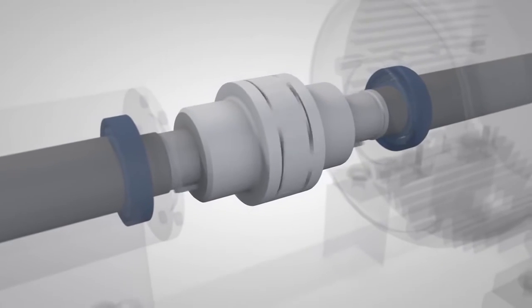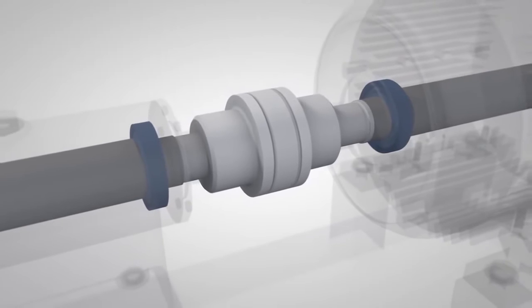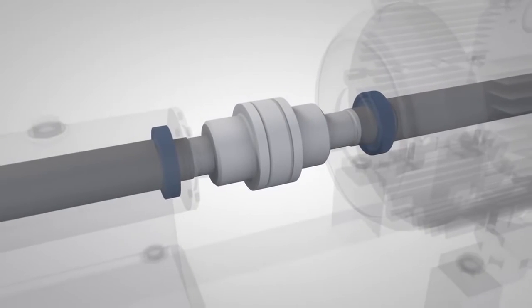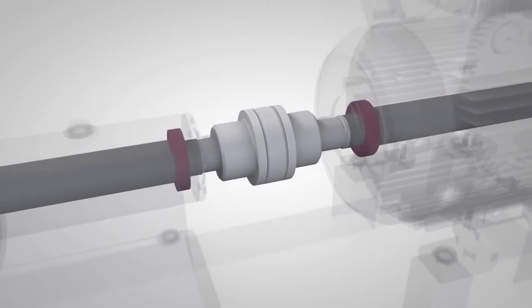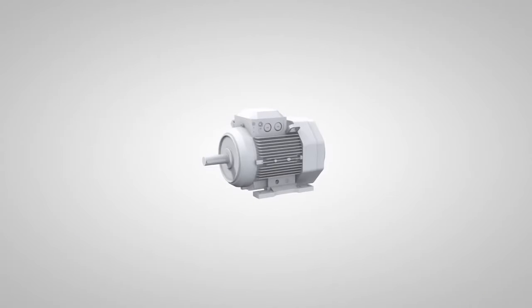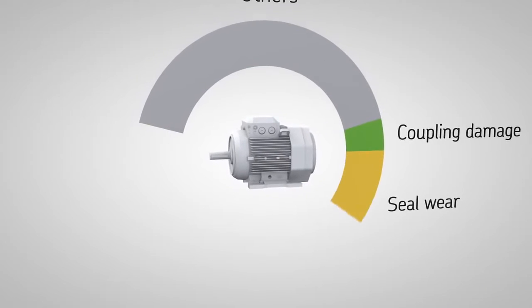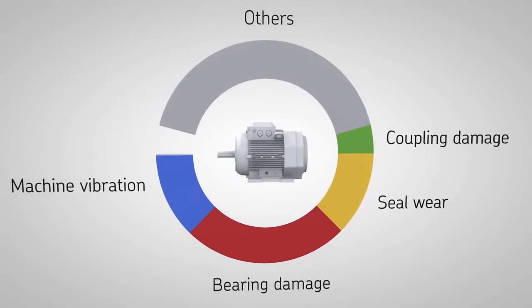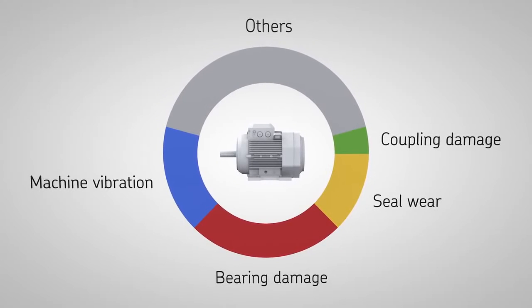Even flexible couplings that are designed to withstand minor misalignments cannot prevent negative effects on other machine components. Field experience shows that around 50% of machine breakdowns can be attributed to damage resulting from shaft misalignment.